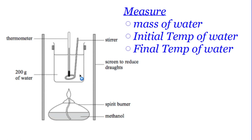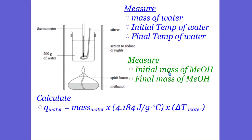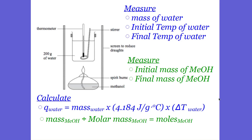The change in temperature is not a measurement — that's a calculation. You also need to measure the initial mass of the methanol and the final mass of the methanol, not the change in mass, which is also a calculation. In your calculation you will calculate the heat the water is absorbing: mass of the water times the specific heat capacity of water, which is 4.18 or 4.184 joules per gram degree Celsius, times the change in temperature of the water. For the methanol, calculate the change in mass of the methanol, then divide by the molar mass of the methanol to get the moles of the methanol.